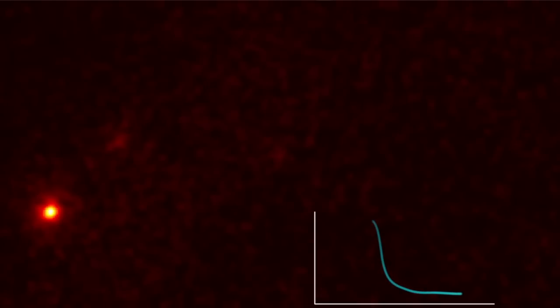But as bright as the pulsar is in gamma rays, it isn't the source of the flares. NASA's Fermi Gamma-ray Space Telescope can look in between the pulsar's brilliant pulses to reveal the faint gamma rays from the underlying nebula.